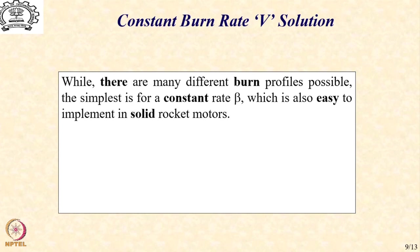Of course, as we have already seen, there are many such possibilities that one can think of for burn profiles. But the simplest that we can at this point make use of is the constant rate β, which indicates that the propellant burns at a constant mass flow rate, which is also easy to implement in solid rocket motors.